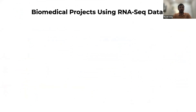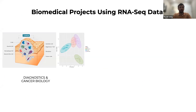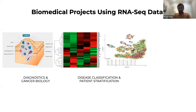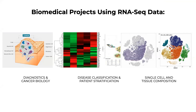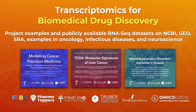You will find many interesting and important biomedical projects that can leverage RNA-seq data for diagnostics and cancer biology understanding, for disease classification and patient stratification — which are so important for clinical trials and understanding of real patient populations — as well as single cell and tissue composition. We will look at how single cell and different types of immune cells and tissues actually represent a heterogeneous composition of cells with different properties that need to be deconvoluted for meaningful drug discovery, screening, biomarker identification, and precision medicine targeting of novel treatments.